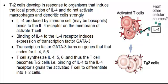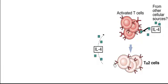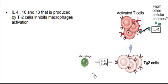Inside the nucleus, GATA3 will express the genes coding for interleukin 4, interleukin 5, and interleukin 6 — all the cytokines produced by T helper 2 cells. Interestingly, T helper 2 cells also produce interleukin 4 themselves, and that interleukin 4 will go and further bind to the interleukin 4 receptor on the surface of more activated T cells, generating even more T helper 2 cells.